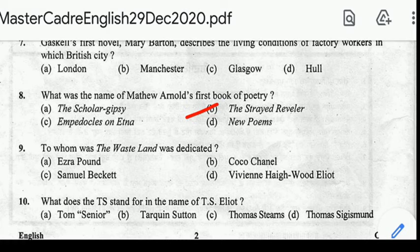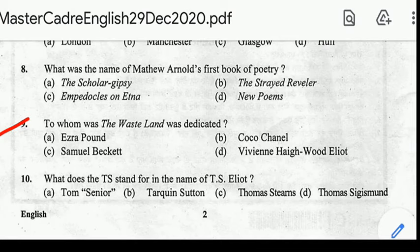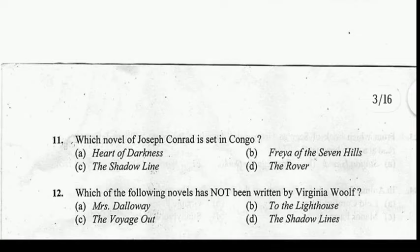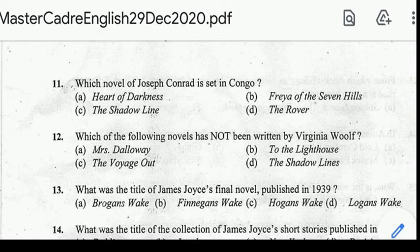Question number nine: to whom was The Wasteland dedicated? Correct answer: option A, Ezra Pound. Question number ten: what does the T.S. stand for in the name of T.S. Eliot? Correct answer: option C, Thomas Stearns. Question number eleven: which novel of Joseph Conrad is set in Congo? Correct answer: option E, Heart of Darkness.